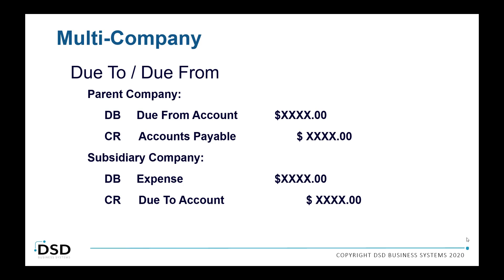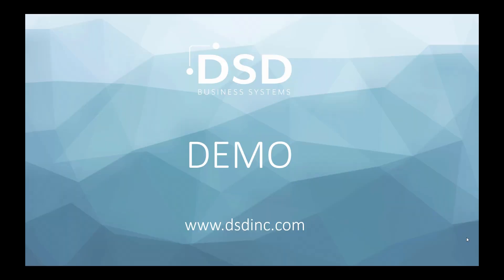Let's talk about due-to and due-from and how that works. When the parent company is expensing a subsidiary, the parent company owns the accounts payable postings on the open invoice, so the credit will be AP and the debit will be the due-from. It automatically posts to the other company's general ledger as a debit to the expense you choose in data entry, and the credit is the due-to account.